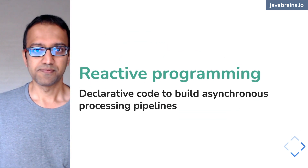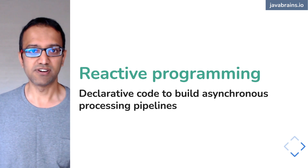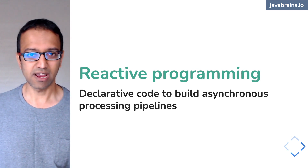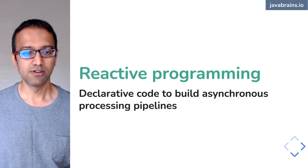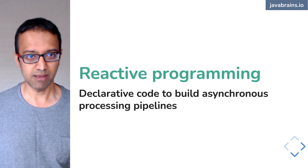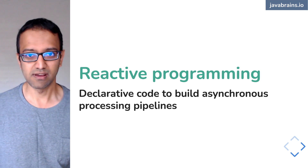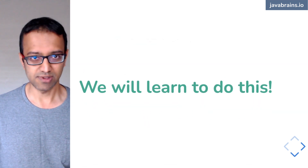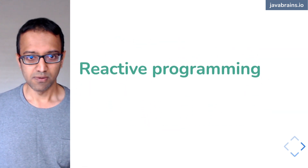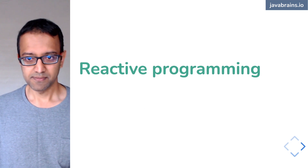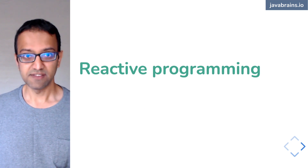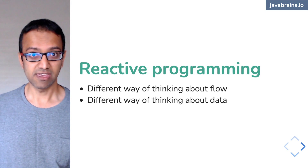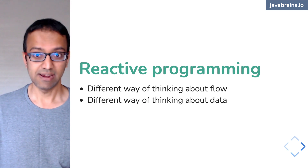So this is the first part of the definition that we tackled earlier: declarative code to build asynchronous processing pipelines, which is what we have been talking about. We'll learn how to do this. Declarative programming is a different way of thinking about the flow of data — a different way of thinking about data itself.